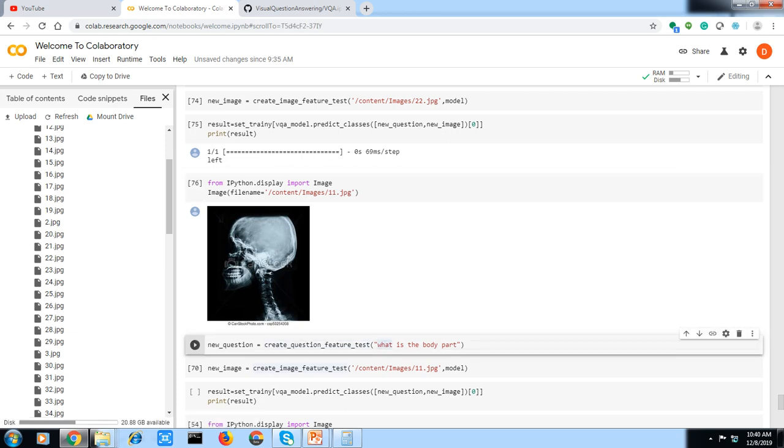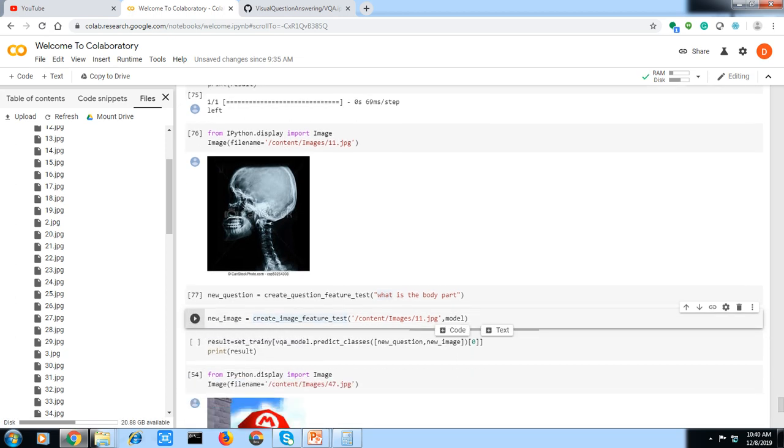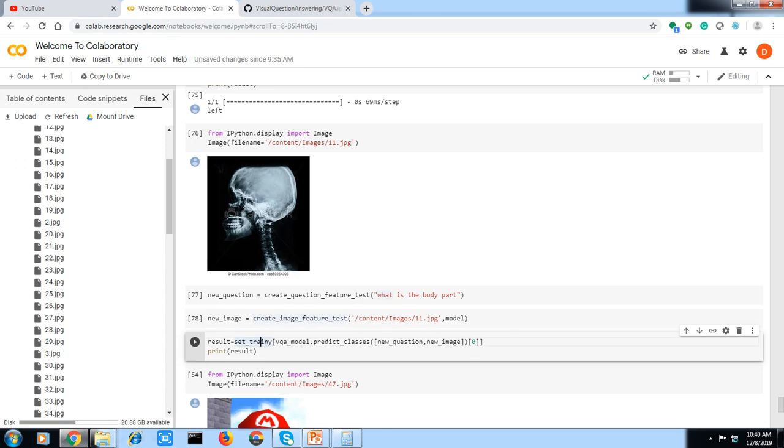Basically, I'm asking what is the body part here. Reading question features and now the image features, extracting them and combining them, and sending it for prediction.